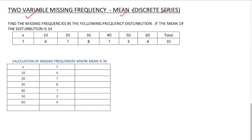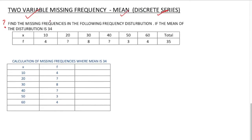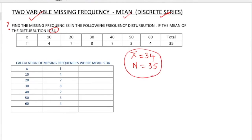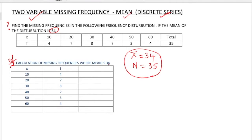Two variable missing frequency in mean in discrete series. The question is: find the missing frequency in the following frequency distribution if the mean of the distribution is 34. To find out two missing frequencies, we must know two values: first, the mean, which is given as 34, and second, the total frequency n equal to 35. If these two values are in the question, then only we can find out the solution.